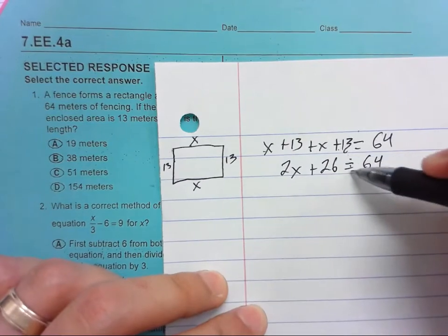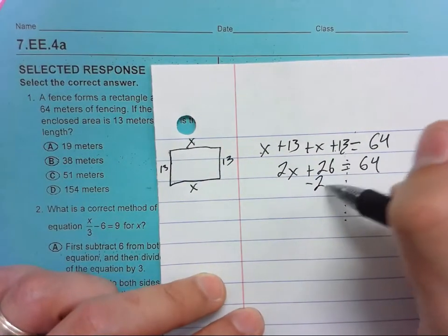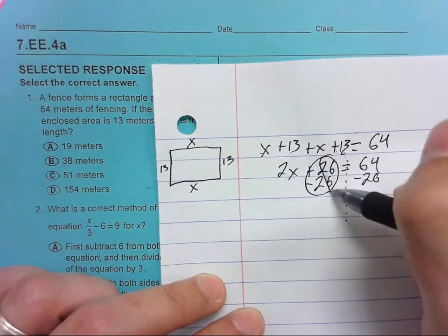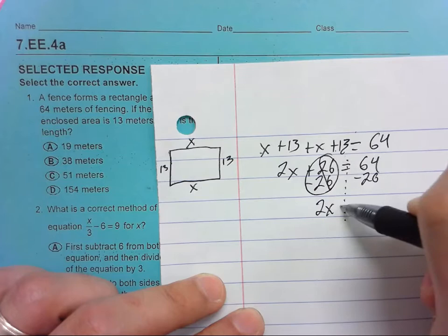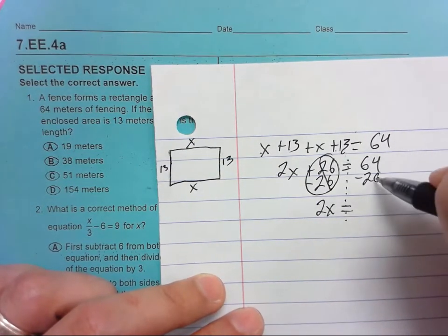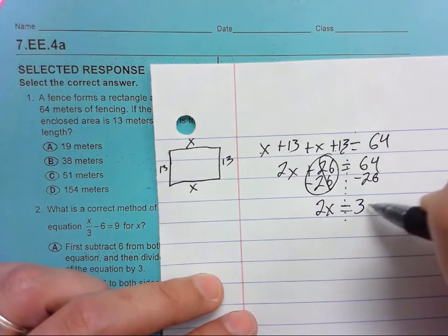So now we just have an equation. So we're going to subtract 26 from both sides. These will cancel. Bring everything down. 2X equals 64 minus 26, is 38.